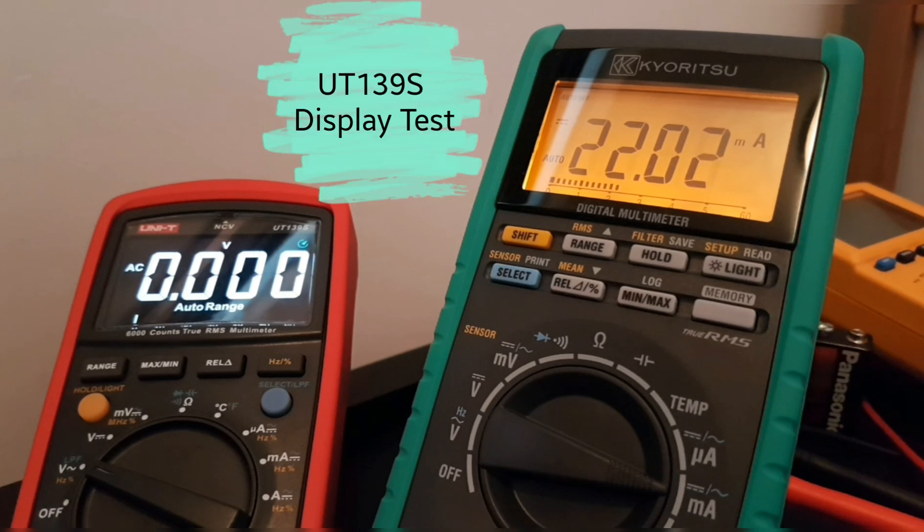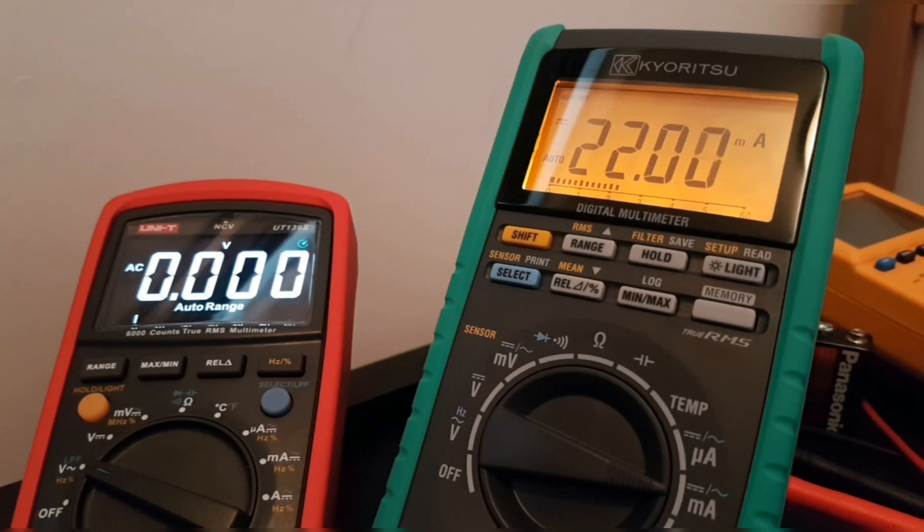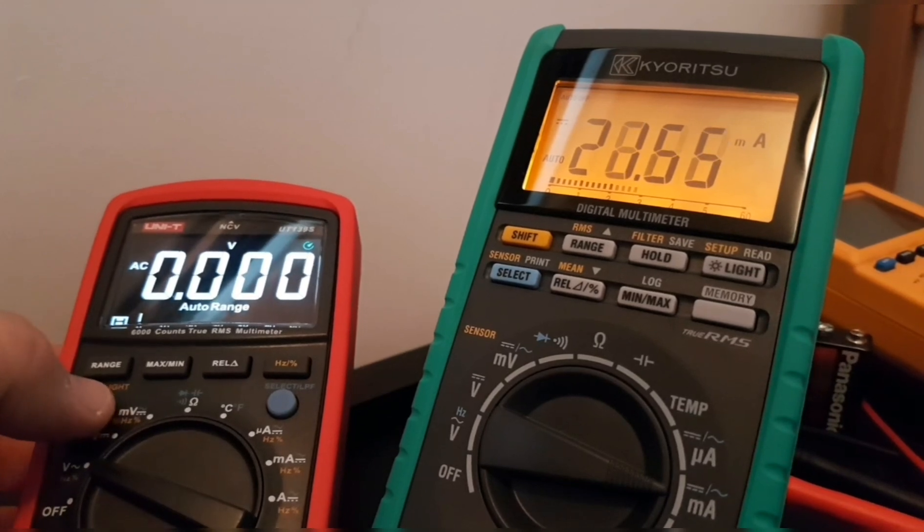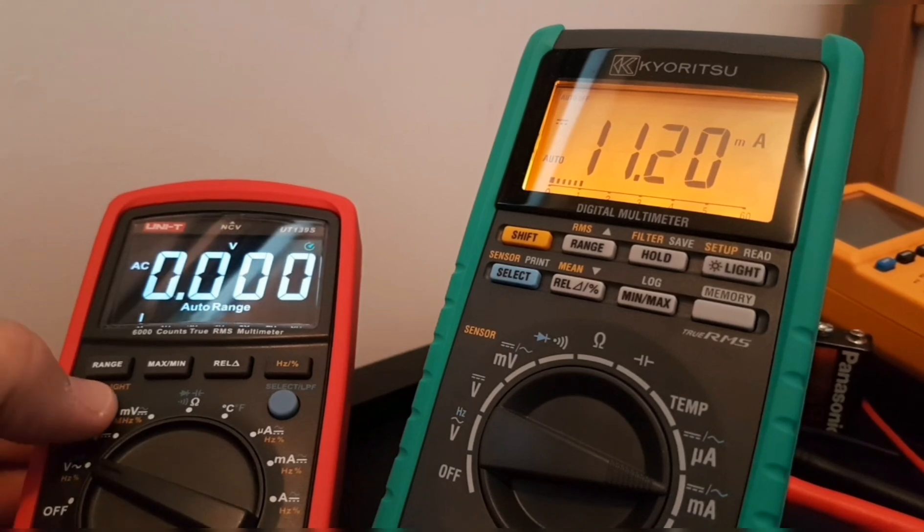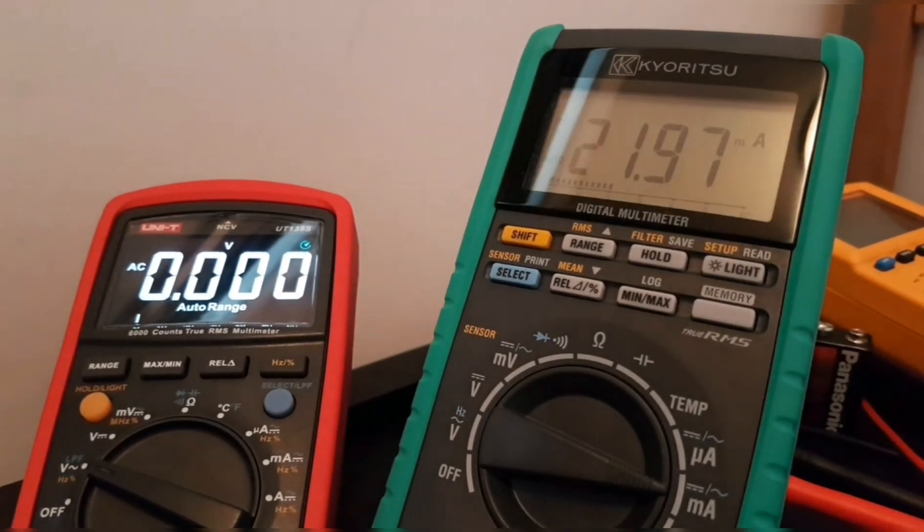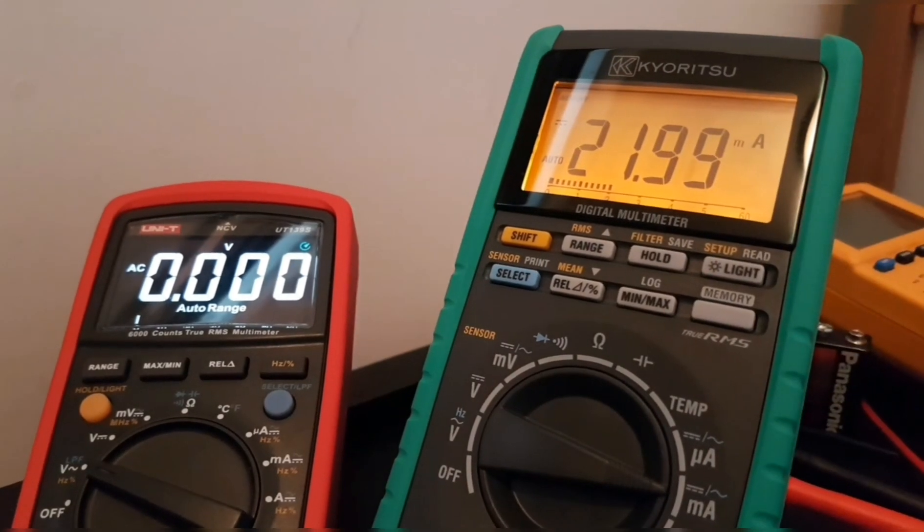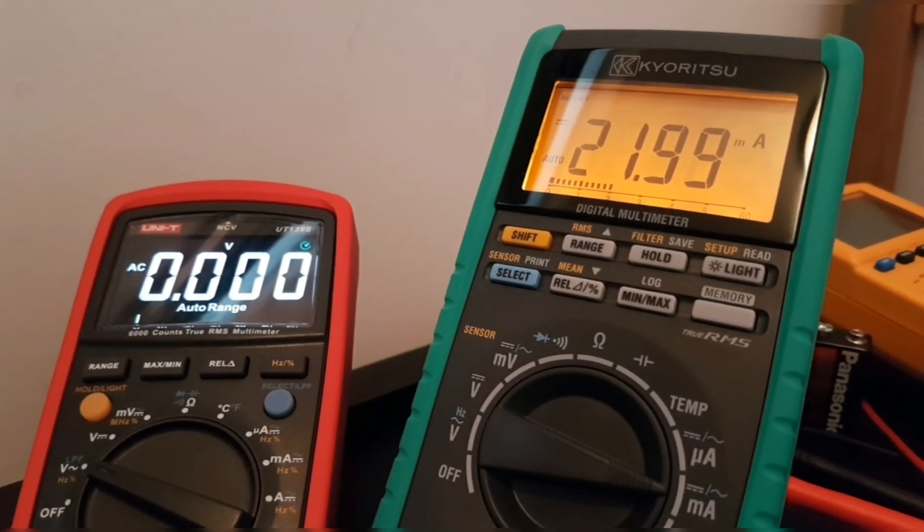Right now I have the UT139S hooked up and it's currently drawing around 22 milliamps, as you can see on the Kyoritsu. That's with the backlight enabled. Now if we turn the backlight off, look at that. The current draw is almost half—it goes down to about 11 milliamps. So that's literally cutting the battery usage almost in half. And once again, if we re-enable that backlight, we're back up to almost 22 milliamps. So having that backlight enabled, you will lose at least half of the battery life.